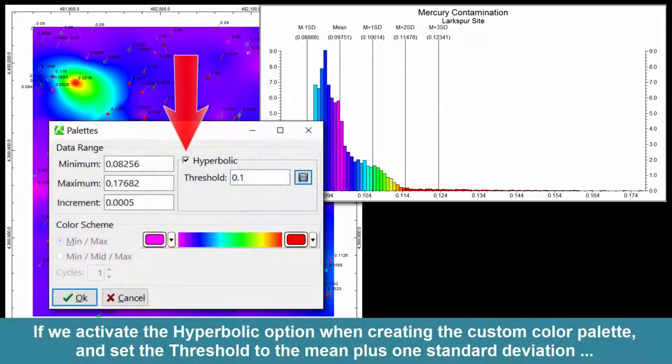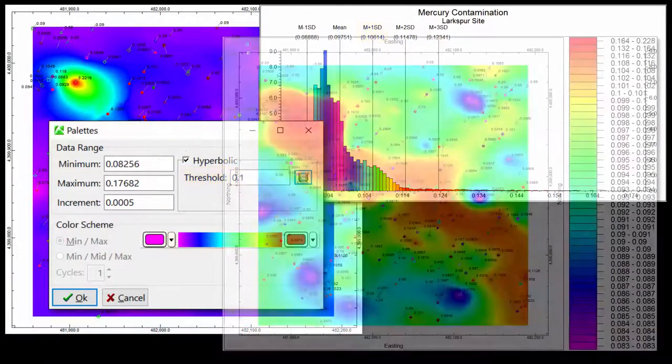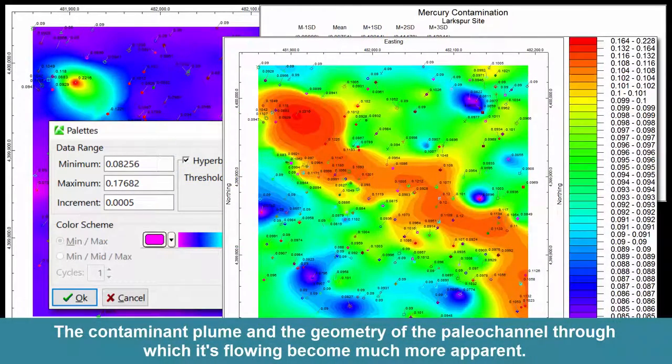If we activate the hyperbolic option when creating the custom color palette and set the threshold to the mean plus one standard deviation, the contaminant plume and the geometry of the paleochannel through which it's flowing become much more apparent.